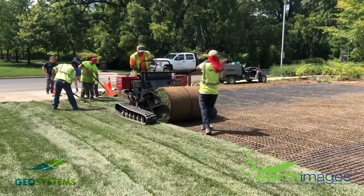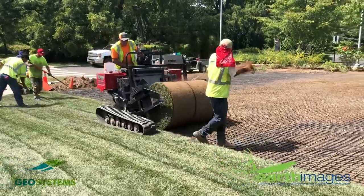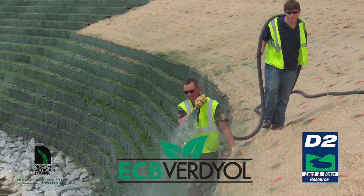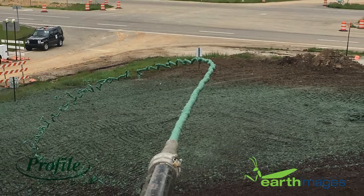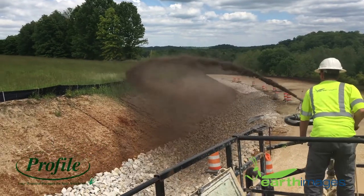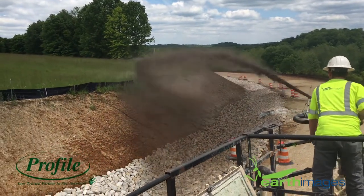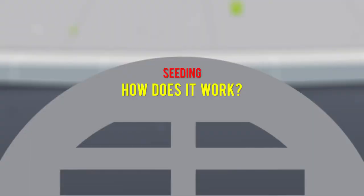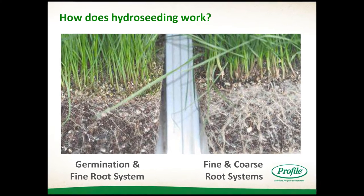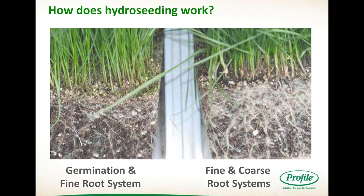Sod placement means to lay a continuous cover of grass sod over exposed soil. Hydro seeding is applying a slurry of water, wood fiber mulch, seed, and fertilizer to prevent soil erosion and provide an environment conducive to plant growth. Fine and coarse root systems hold soils in place, and root growth begins with seed germination.